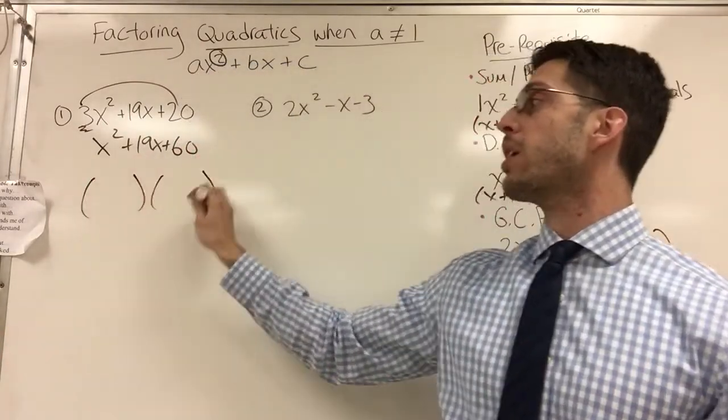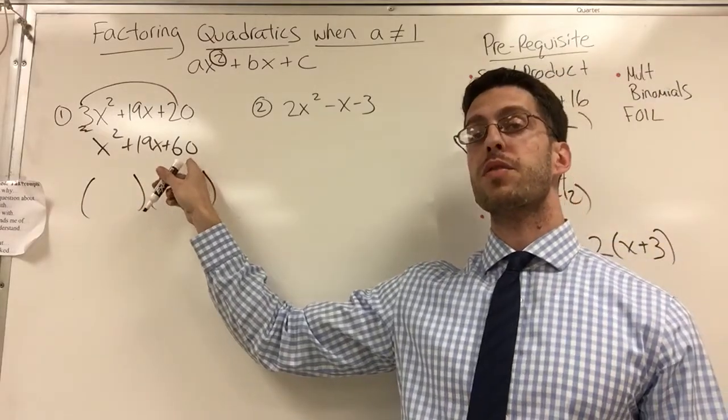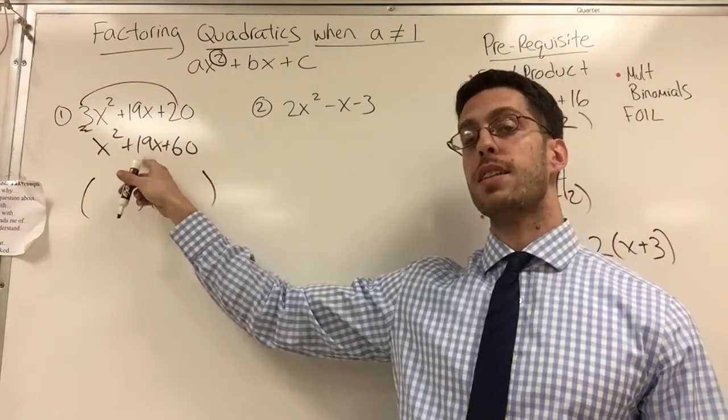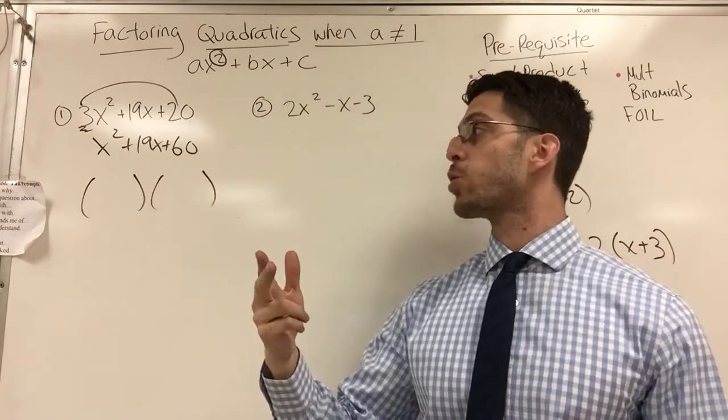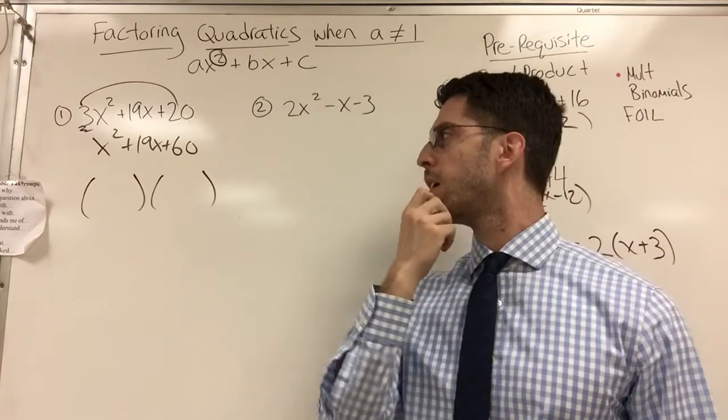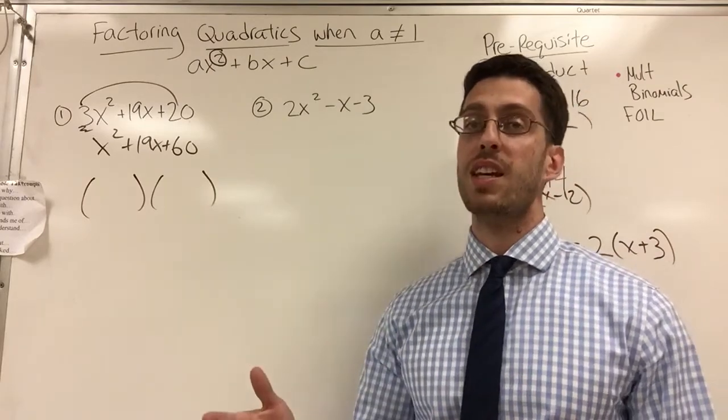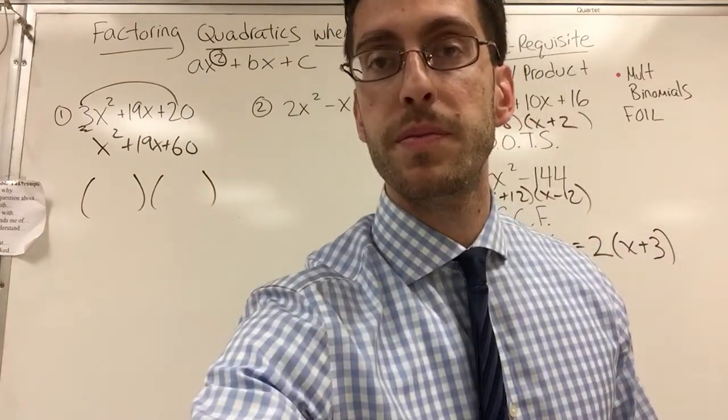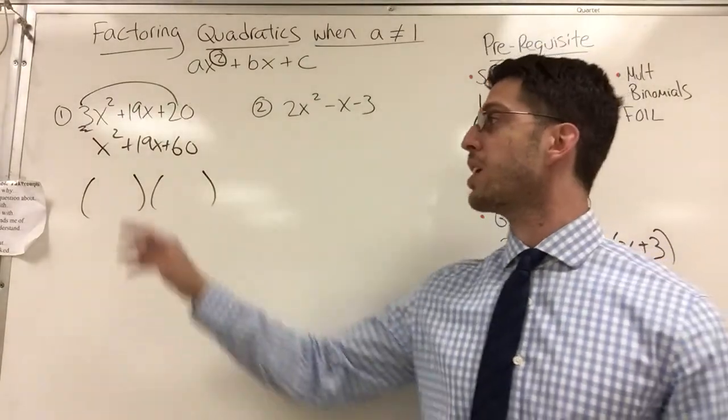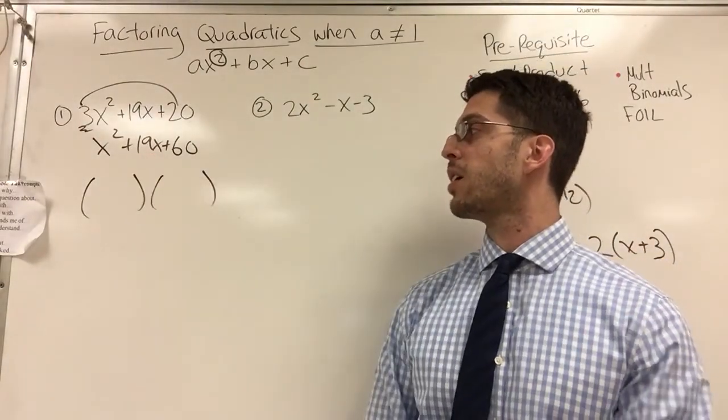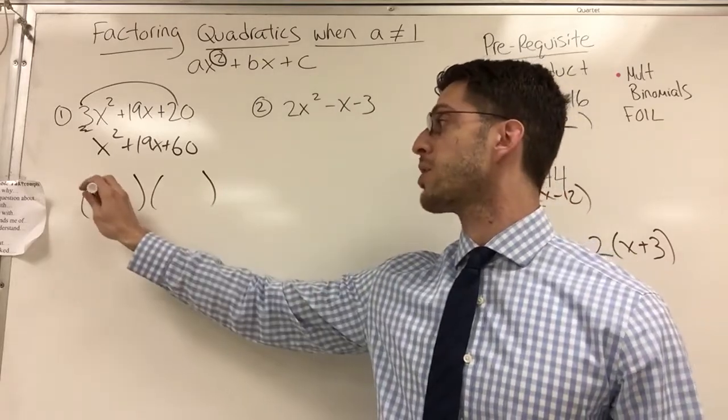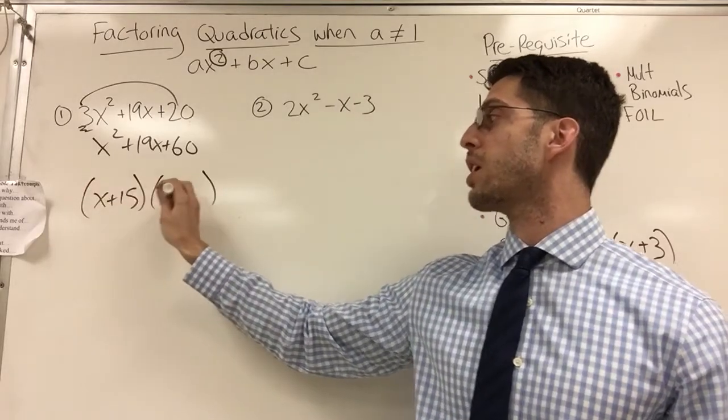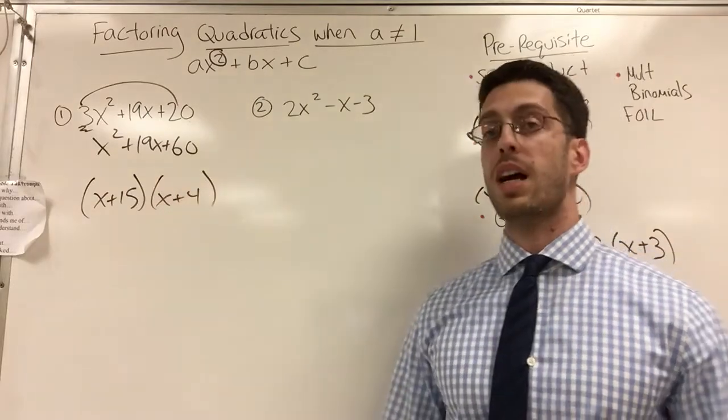So you should be thinking, what are the factors of 60 that also add to 19? 60 and 1. No. 10 and 6. No. 20 and 3. No. 15 and 4. 15, 30, 45, 60. Great. So this is going to be x plus 15 and x plus 4. Got it.